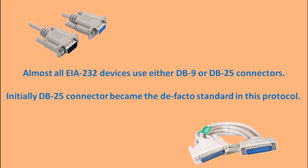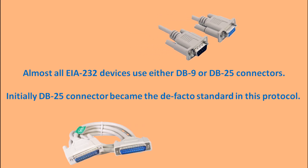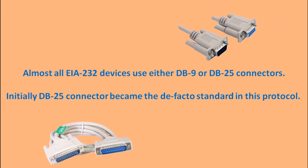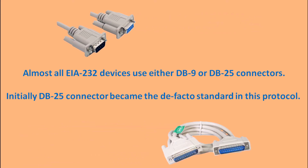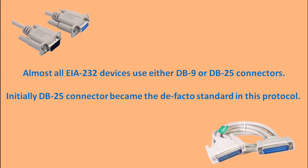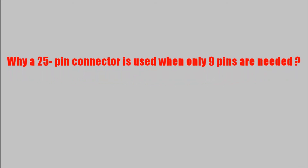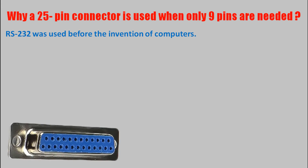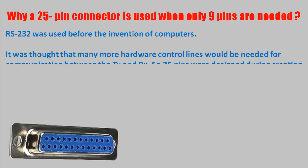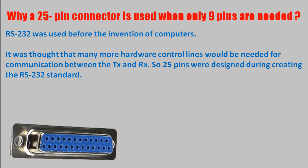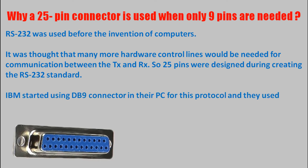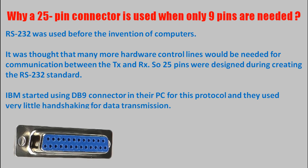Almost all EIA-232 devices use either DB9 or DB25 connectors. Initially, although it was not formally defined, the DB25 connector became the de facto standard for this protocol. It is often asked why a 25-pin connector is used when only 9 pins are needed. The answer is that RS-232 was developed before the invention of computers, so it was thought that many more hardware control lines would be needed. Hence, 25 pins were designed when creating the RS-232 standard.